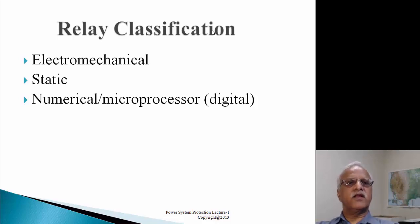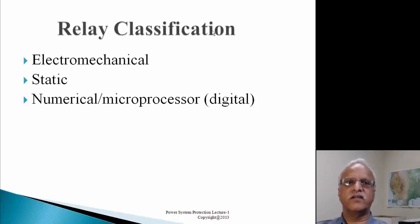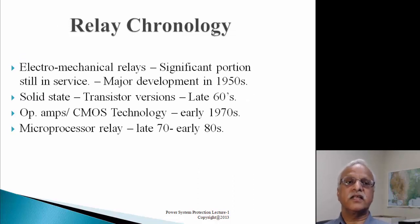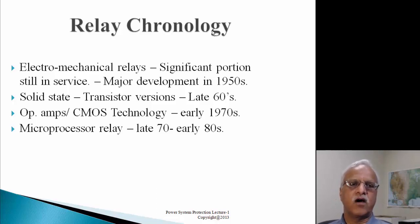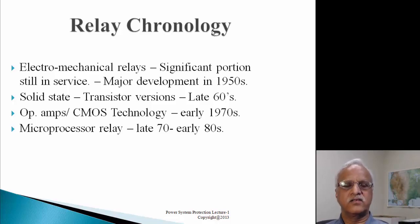Relay classifications include electromechanical, static, and numerical microprocessor-based relays. Electromechanical and static relays were a significant portion and about 50% are still in service today. Major developments were in the 1950s. After the invention of transistors in the 1960s, we got solid state relay versions. Op-amps and CMOS technology came in the early 1970s. The invention of the microprocessor led to microprocessor-based relay designs in the late 1970s and early 1980s, and development continues. Today we use primarily digital relays with far more technology.